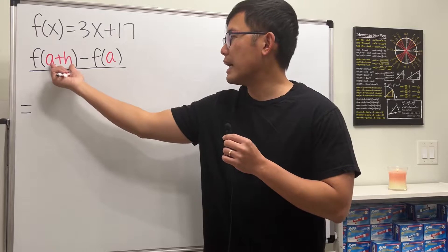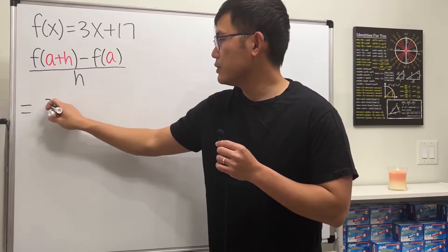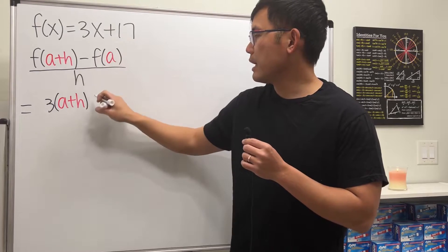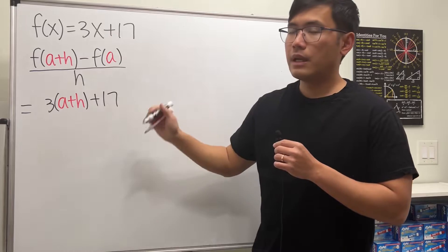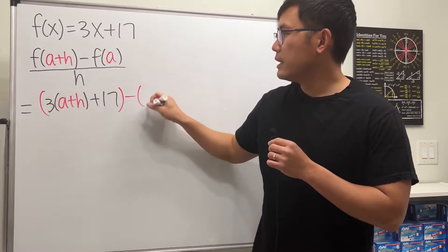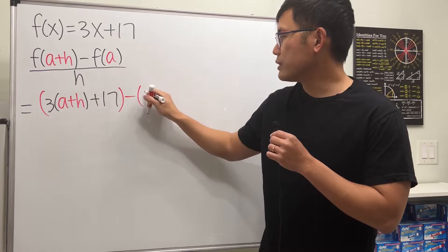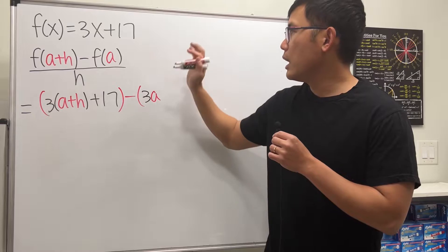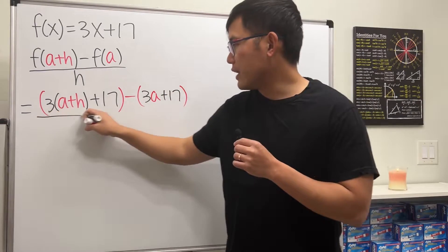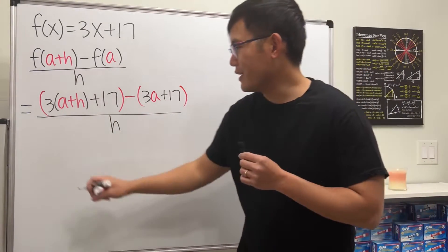Here we go. We first figure out f(a+h), which means we put a+h into x, so we get 3 times (a+h) plus 17. That's the first part. Then minus the second part, f(a), where we put a in, giving us 3a plus 17. All of this is divided by h.